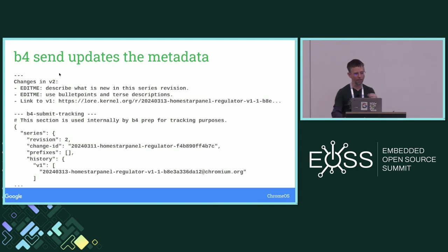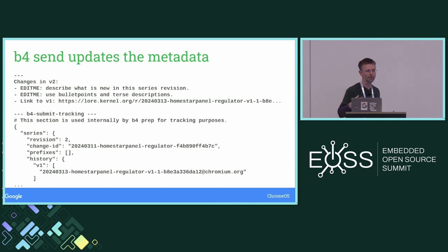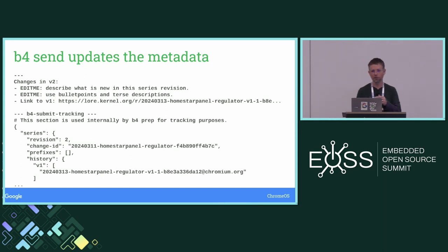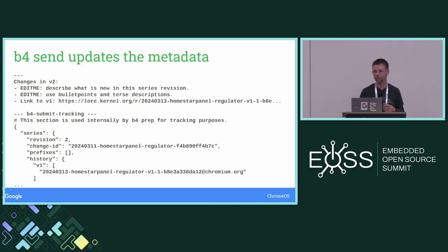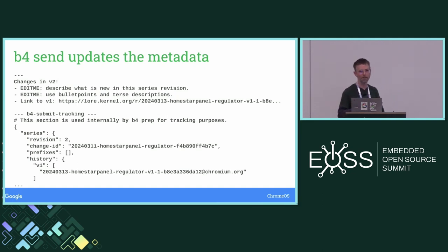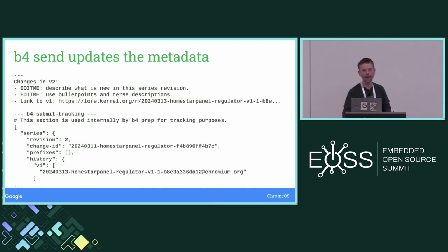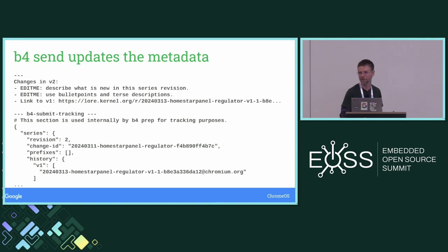B4's version history is really on a patch-series basis, not patch-by-patch. B4 helps you and encourages you to send version history in the cover letter, and it's up to you to figure out per-patch version history yourself in your own formatting. This is very different from Patman, which is really focused on per-patch version history with the cover letter being just the aggregate. More and more as people use B4, I notice they don't tend to have version history in each individual patch, which is a little annoying to me.